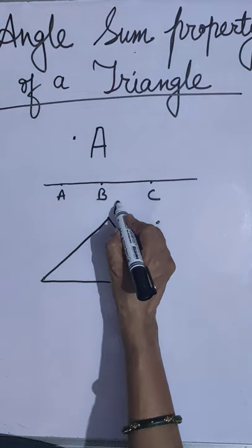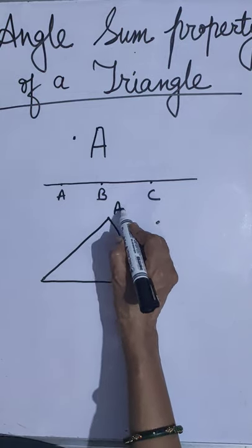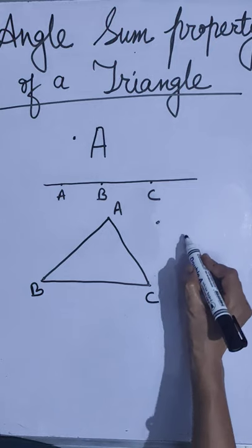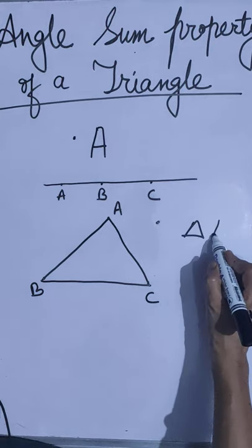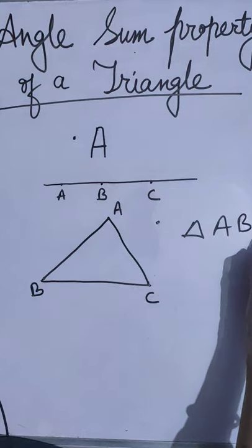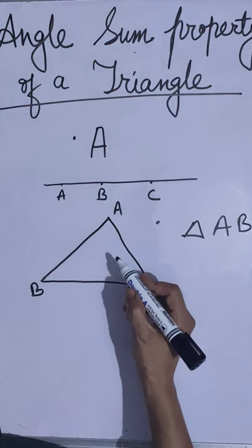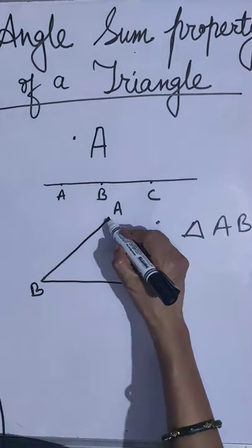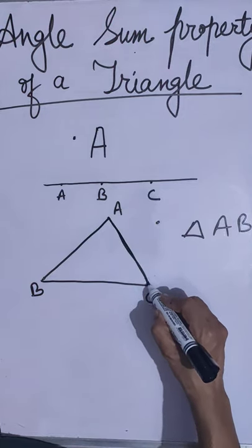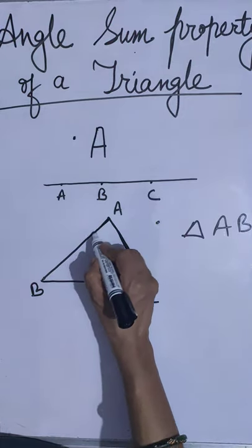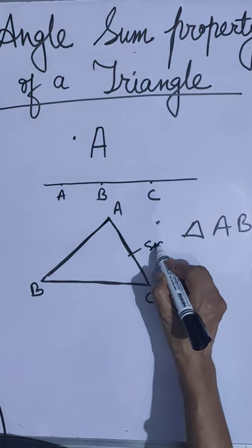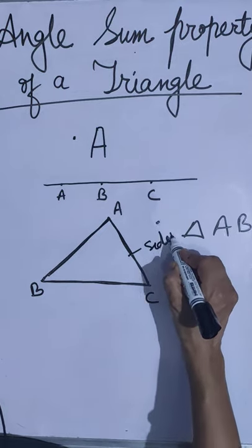When you join these three points, what will you get? A triangle. What is the name of this triangle? Triangle A, B, C. How many sides does it have? Three sides: AC, AB, and BC. These are the three sides.